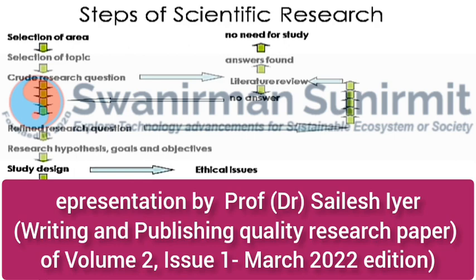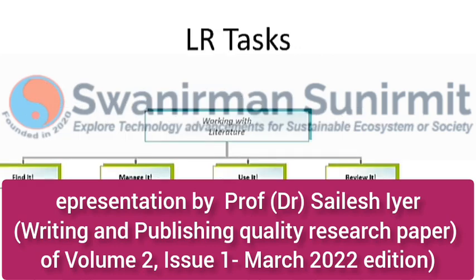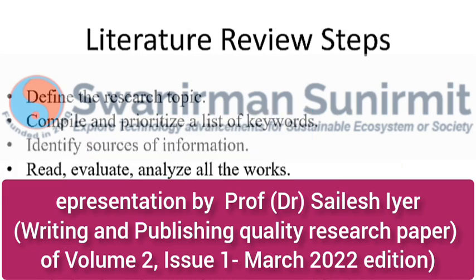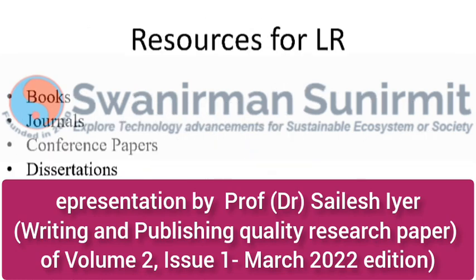This is how scientific research should be conducted, which is not always being done correctly. Literature review is supposed to be followed during your registration review. The steps include: defining the research topic, compiling and prioritizing a list of keywords, identifying the sources of information, reading, evaluating and analyzing all works, and identifying the relationships between works in the literature. You can use resources from different authentic journals and publications.